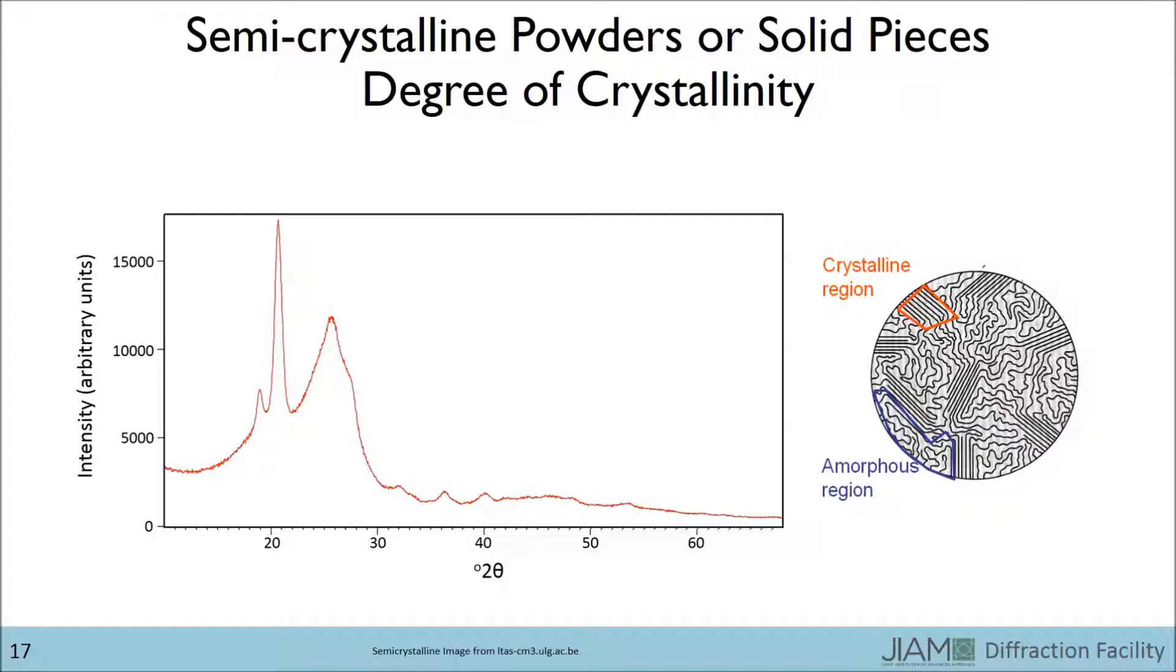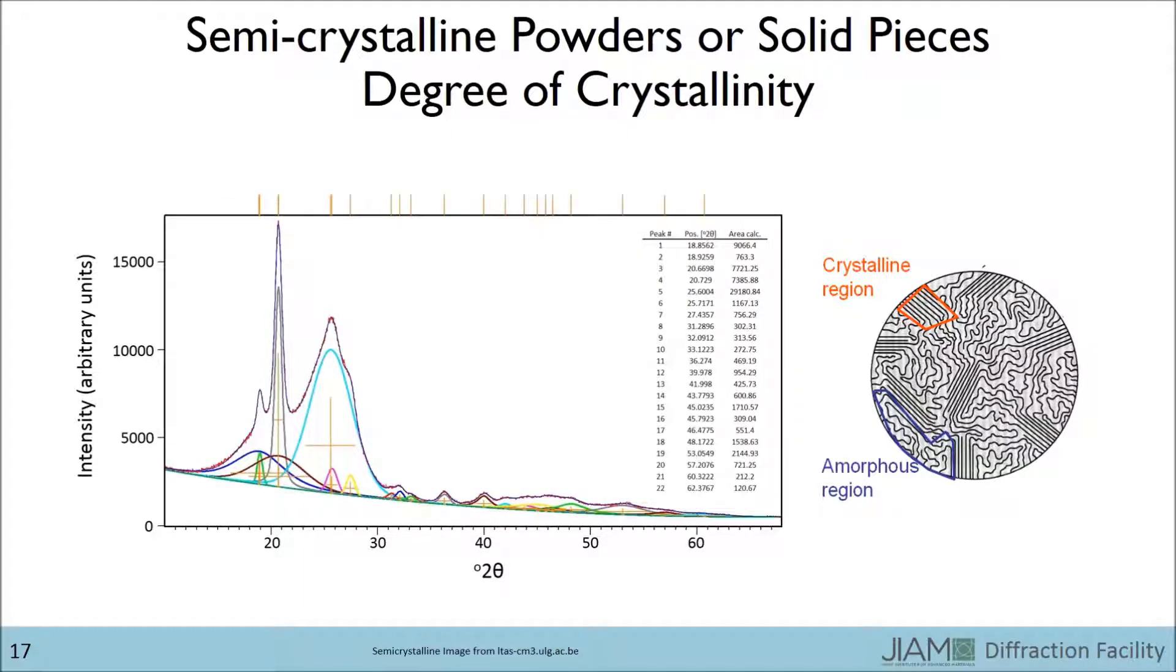Determining the degree of crystallinity of such a semi-crystalline material requires first deconvoluting the diffraction pattern. For instance, an example of the raw data is shown in the figure. This pattern is a sum of all peaks. Utilizing software such as HighScore Plus or Origin, we are able to determine the contribution from each peak. Such analysis should also give the area beneath each peak, which can then be used to calculate the degree of crystallinity by dividing the total area of the crystalline peaks by the total area beneath all peaks.